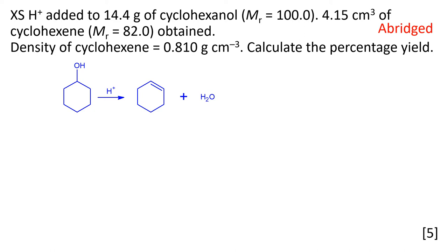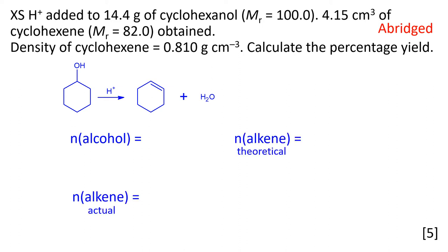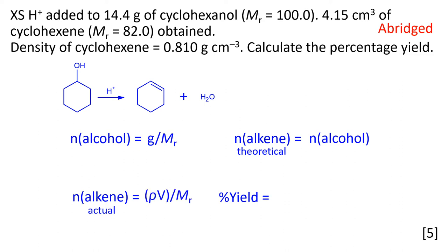One mole of the alcohol gives us one mole of the alkene. We can work out the amount of substances by using mass over molar mass. The amount of the alkene that you would get theoretically is the same as that of the alcohol, because it's a one-to-one reaction.